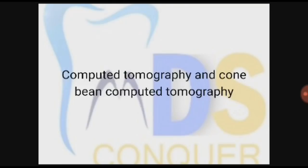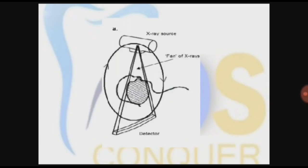Coming to computed tomography and cone beam computed tomography. This picture shows computed tomography in which there is an x-ray source and a fan-shaped beam of x-rays is coming and falling on the detector. The x-ray source is like the tube head from where x-ray is coming, and detectors are the receptors which detect the x-ray coming out of the patient after attenuation.